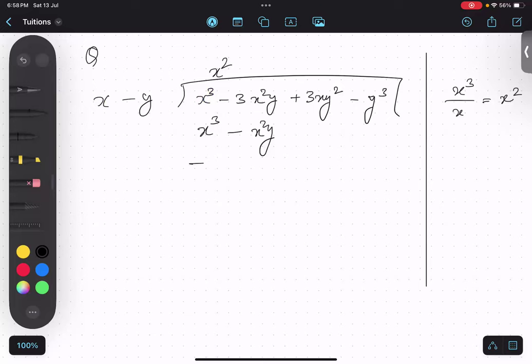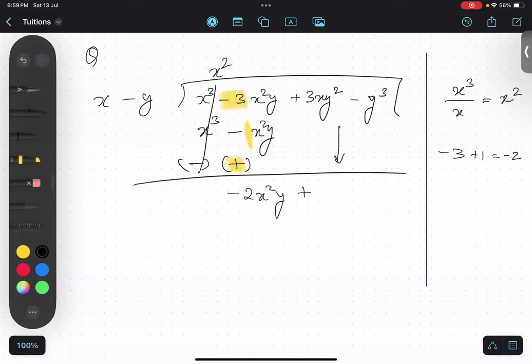So we will change the sign. So what will happen? This will get cancelled. Now over here minus 3 and plus 1. It is a 1. So minus 3 plus 1 is what? Minus 2x²y. So minus 2x²y. And keep as it is other terms. 3xy² minus y³.